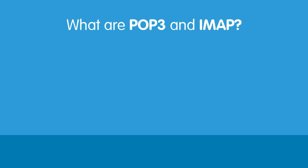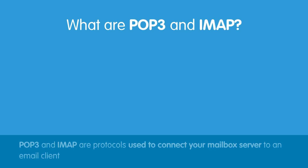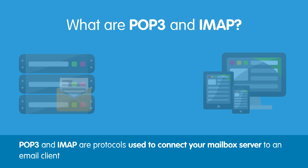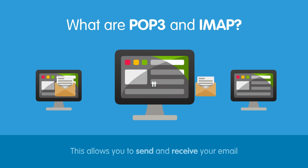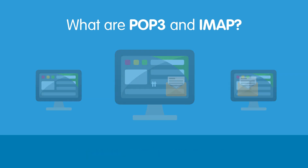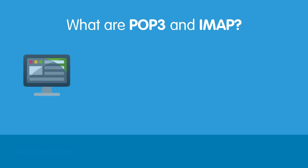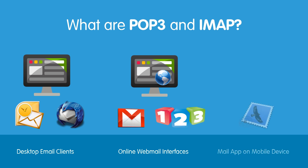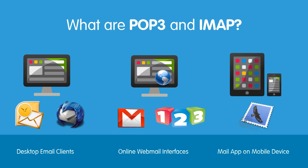To start, let's learn exactly what POP3 and IMAP are. POP3 and IMAP are protocols used to connect your mailbox server to an email client, which allows you to send and receive your email. These include desktop clients such as Microsoft Outlook or Mozilla Thunderbird, an online webmail interface such as Gmail or 123mail, or your email app on a mobile device such as a tablet or smartphone.